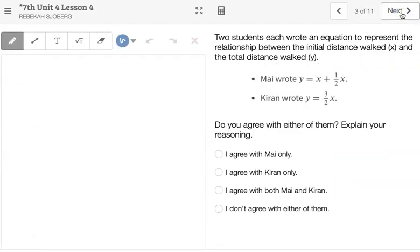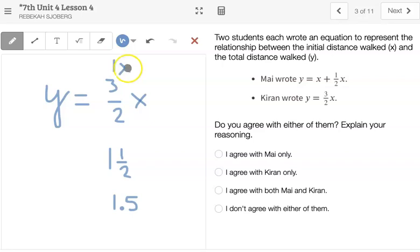So moving on to slide 3, it kind of talks about that difference where Mai wrote X plus a half X, and Kieran wrote Y equals 3 halves X. If you notice Y equals 3 halves X, 3 halves is the same as 1 and a half. That's the improper fraction version of this mixed number, 1 and a half, which is equivalent to that 1.5. So notice if we have this X right here, which is an invisible 1X, 1X plus 1 half X, these end up being equivalent because this 1 plus 1 half is still 1 and a half. So I agree with both of them.